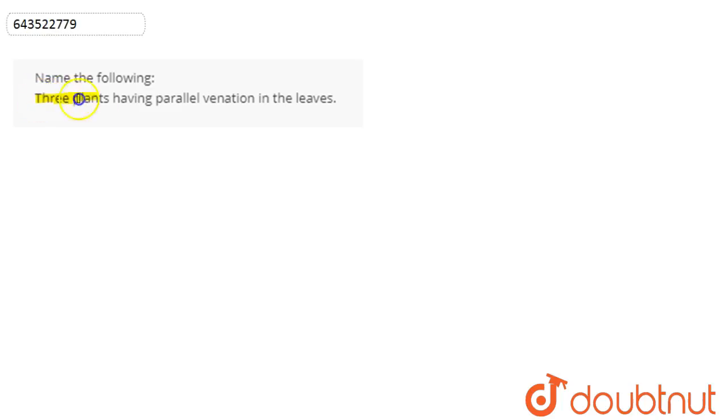to name three plants having parallel venation in the leaves. So we'll discuss what parallel venation is. First of all, venation is the arrangement of veins in the leaves.